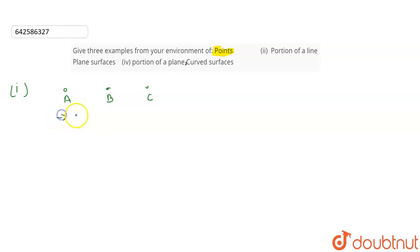Now what are the examples we can take for the points? So we can take first as a pinhole on the map. The pinhole what we have in the map can be referred as point because point can be anything.